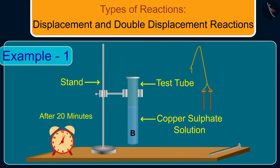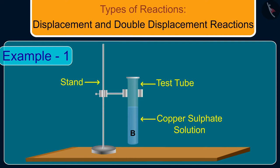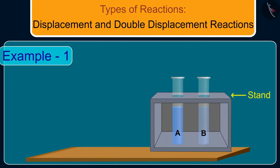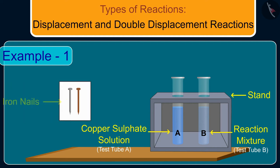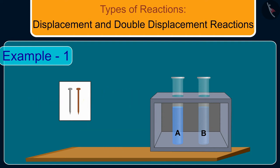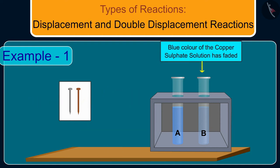After 20 minutes, take out the iron nails from the copper sulfate solution. Now compare the intensity of the blue color of the copper sulfate solutions in test tubes A and B, and also compare the color of the iron nails dipped in the copper sulfate solution with the one kept aside.